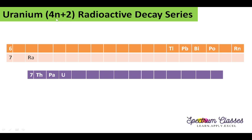This means its mass number is a multiple of 4 with remainder 2. In this video we are going to see how this radioactive disintegration series disintegrates and what daughter elements are formed during this disintegration.